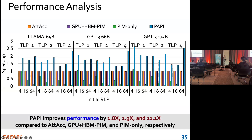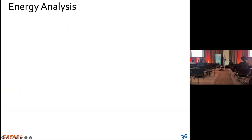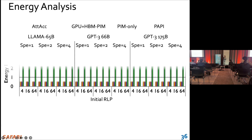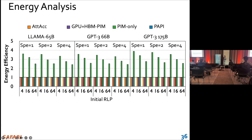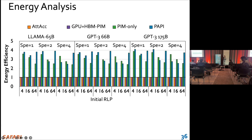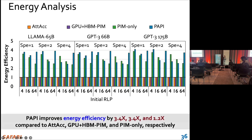Our speedup over the PIM-only system is because of two reasons: hybrid PIM units and a heterogeneous system with computation-centric processing units. Here are the energy efficiency results. On average, PAPI improves energy efficiency by 3.4 times, 3.4 times, and 1.2 times compared to the three baselines.